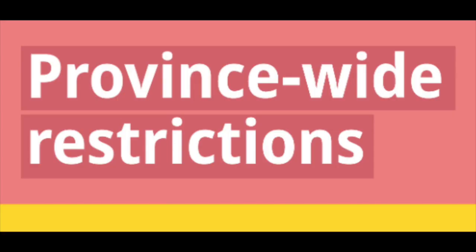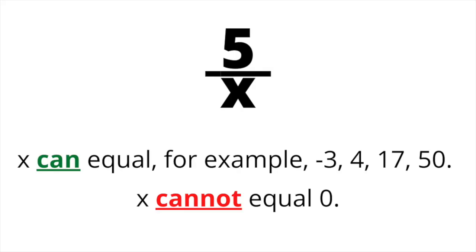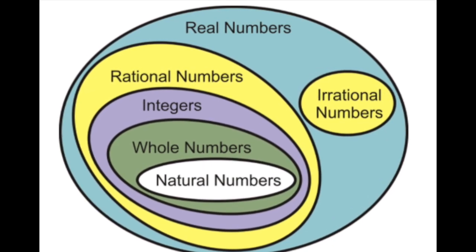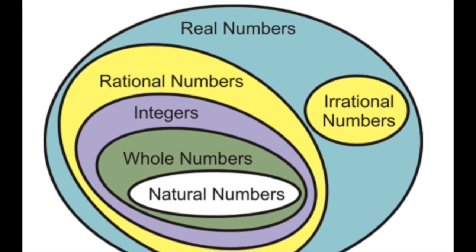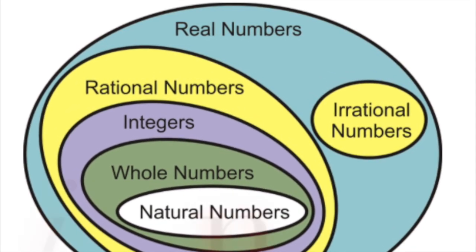When COVID-19 was prevalent, provinces placed restrictions on the number of people who could gather together. In math, we can restrict variables to certain numbers. When you state a restriction on a variable, you identify the values of that variable that make that expression a real number.